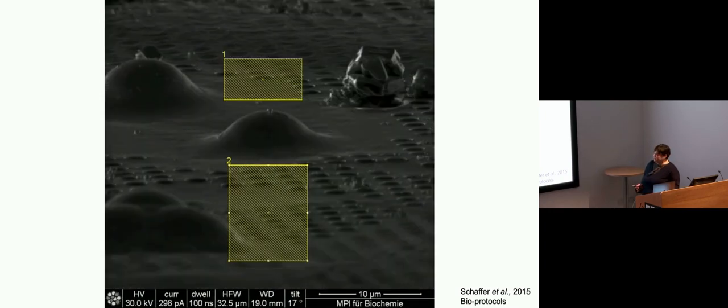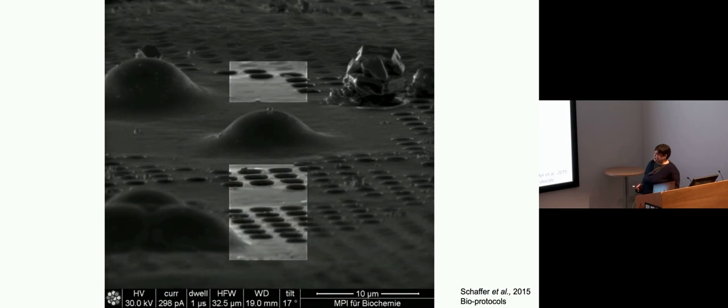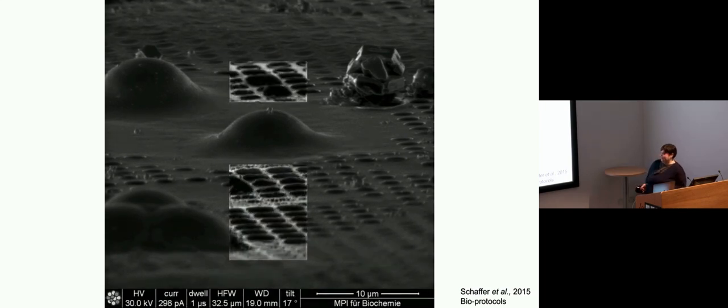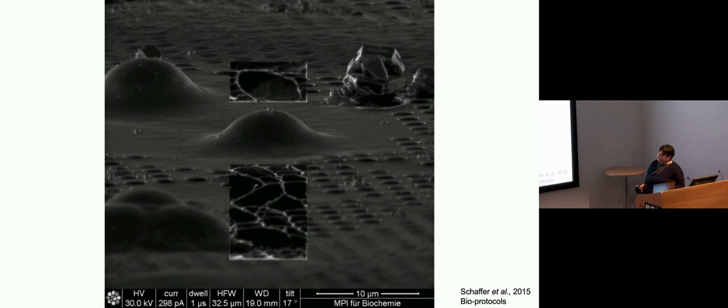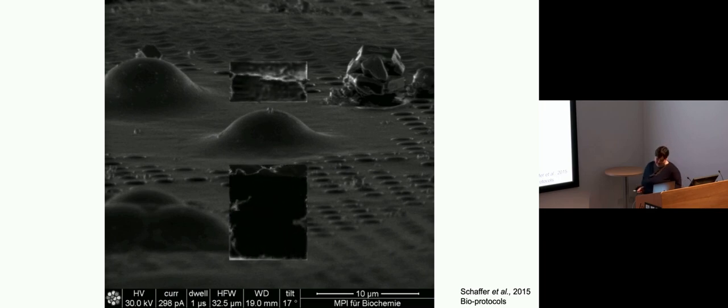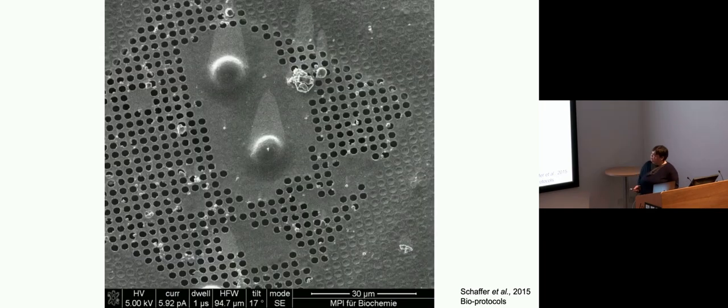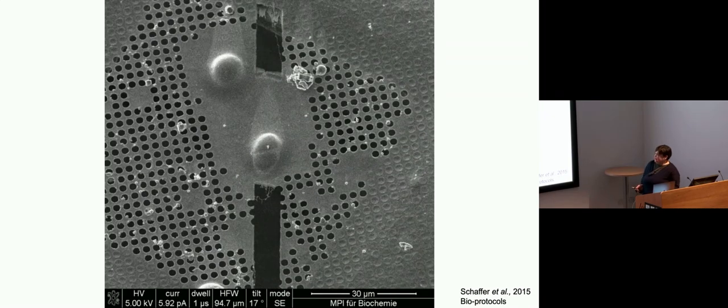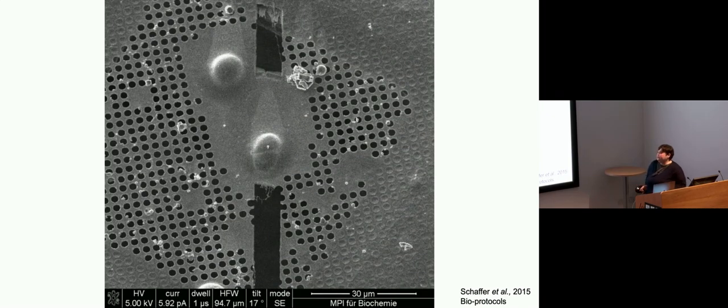Which in the SEM looks something like this. These first cuts, in this case, because the cells are quite small, haven't even gone onto the cell. But they're quite important for opening up space later for the tomography.